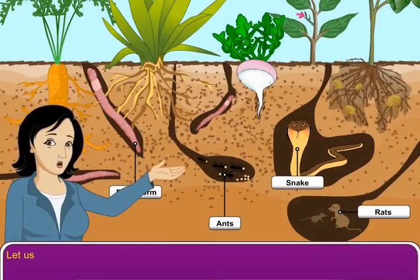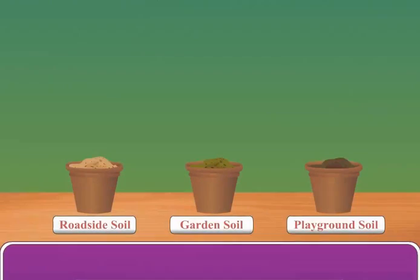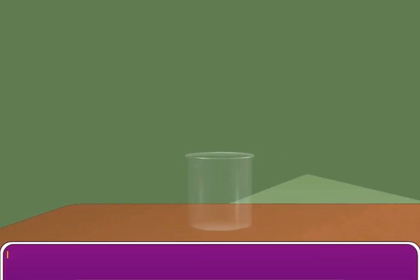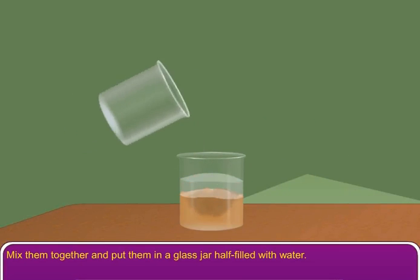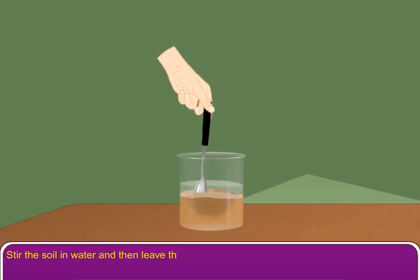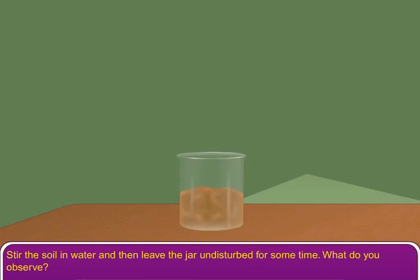Let us perform a simple activity to find out the contents of soil. Collect different types of soil from roadside, garden, and playground. Mix them together and put them in a glass jar half filled with water. Stir the soil in water and then leave the jar undisturbed for some time.